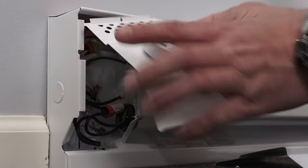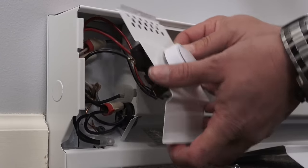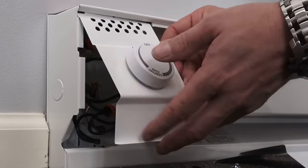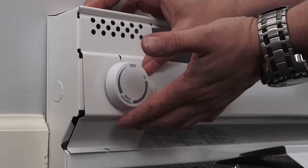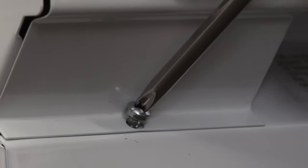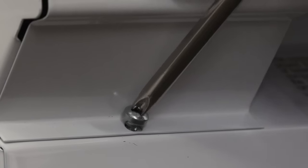Once all your connections are made, safely tuck all wires in the wiring compartment and then secure the thermostat to the baseboard with the screw provided.